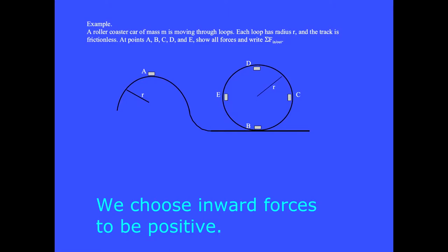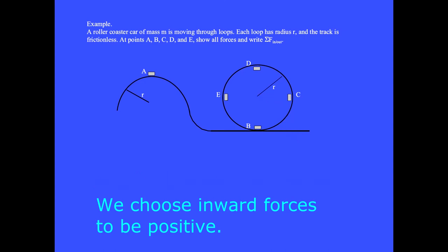At point C, the weight points straight to the center of the Earth and is not involved in the sum of the inward and outward forces. The normal force points inward, and we have the sum equals plus N equals Mv² over R. The same thing occurs at point E, where the sum of the inward and outward forces is plus N equals Mv² over R.